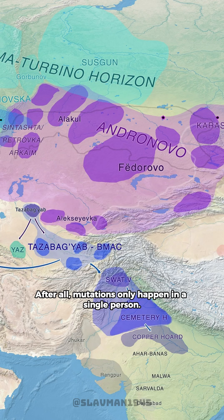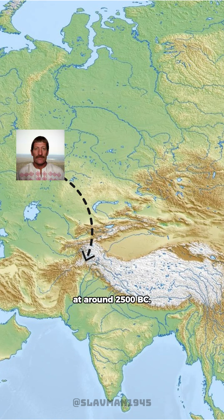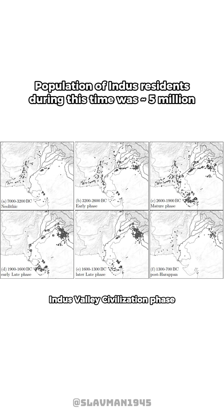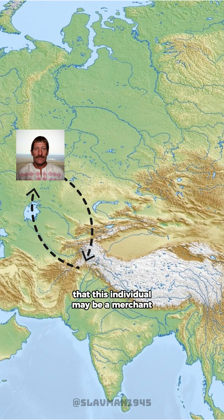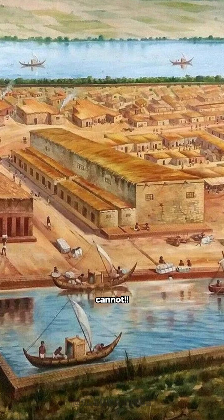After all, mutations only happen in a single person, so if Y3 is of Indian origin, its presence could simply reflect the migration of one individual to India around 2500 BC. At that time, India was in the mature Harappan Indus Valley Civilization phase, a well-known trading place with connections to Central Asia. It's plausible, even very likely, that this individual may have been a merchant or even a slave who migrated from the steppes to the Indus Valley. However, that one person in a civilization with millions of people cannot impose his language or the caste system on the locals.